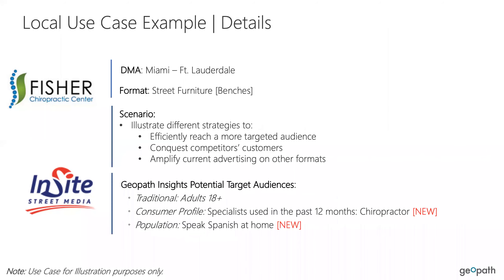The scenario we have today uses the Miami–Fort Lauderdale DMA, and we're focusing on benches. We're going to look at different strategies: reaching a more targeted audience, conquesting competitors' customers, and amplifying current advertising on other formats — since they were advertising on television. We're looking at the Insights suite for potential target audiences. We looked at the traditional adults 18+, and we looked at the consumer profile. There are 8,000 profiles — we found one that fit: specialist used in the past 12 months, chiropractor. We also looked at a population target: speaking Spanish at home.